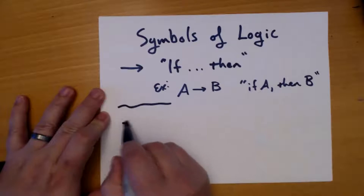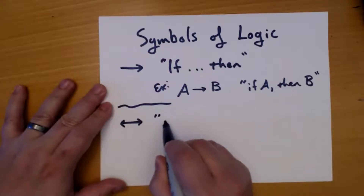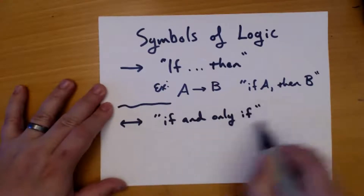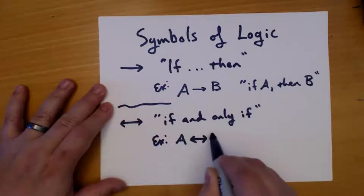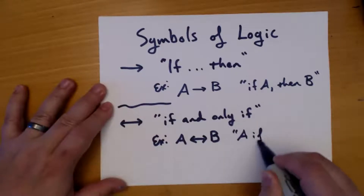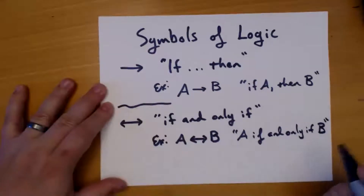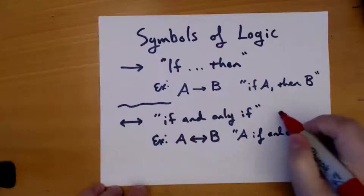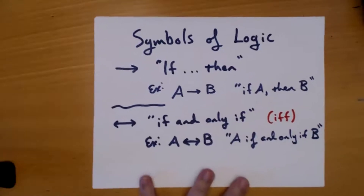Next is a double-headed arrow. This is written as 'if and only if.' For example, if I wrote A and then a double-headed arrow, that would be: A if and only if B. Sometimes this is abbreviated — mathematicians love abbreviations — as 'iff,' with two F's.